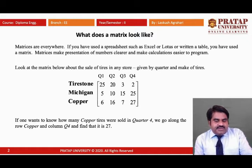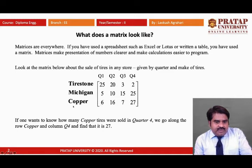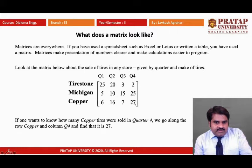If we discuss a matrix given in the slide, there are three rows and four columns. The columns are mentioned as Q1, Q2, Q3, Q4 — these are the four quarters in a year — and there are some types: Firestone, Michigan, Copper. If we want to know how many copper tires were sold in quarter four, we move to the copper row through quarter four and get the element 27. So in quarter four, the total copper tires sold were 27.